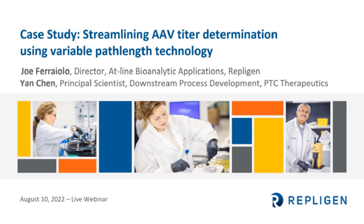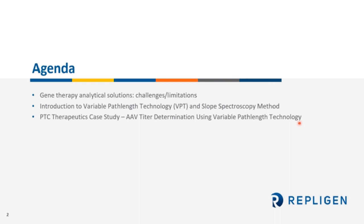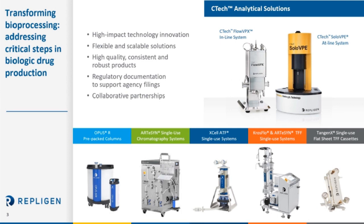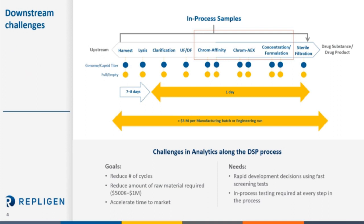We'll be talking about our analytical solution, the challenges, the limitations, and provide a brief introduction to variable path length technology — or as we call it, VPT — and slope spectroscopy. We'll end with a PTC Therapeutics case study for AAV titer determination using our variable path length technology. The SoloVPE and FlowVPX are the analytical solutions provided by Repligen, used across multiple platforms for applications from protein concentration to mRNA, oligonucleotides, and a variety of gene therapy applications.